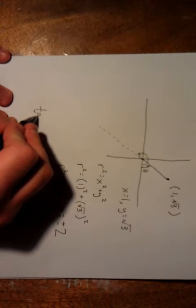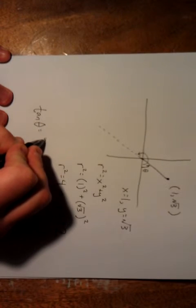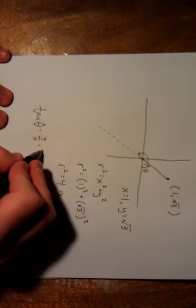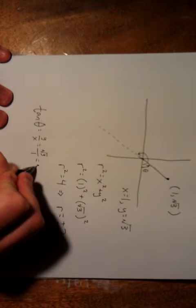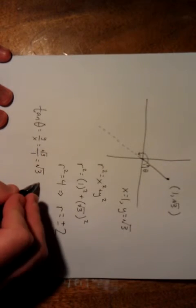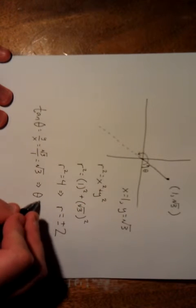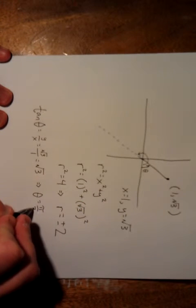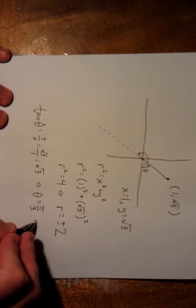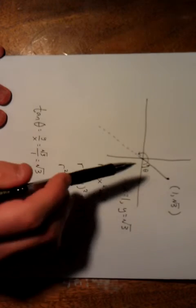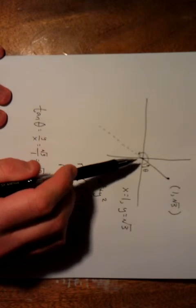Now we said on the last sheet that the tangent of theta is equal to y over x, so for us y over x would be square root of 3 over 1, or we could just call that square root of 3. Thinking back to our unit circle, this occurs in quadrant 1 when theta is equal to pi over 3 radians. Pi over 3 radians, or 60 degrees.